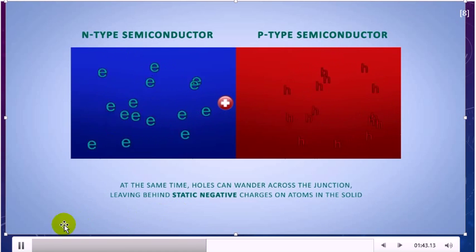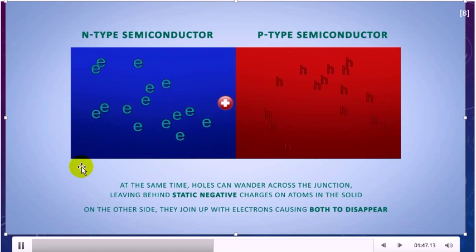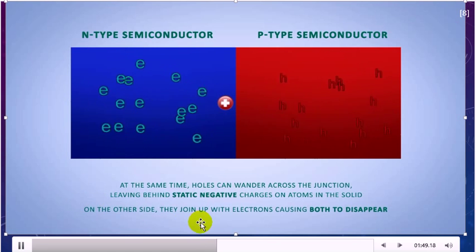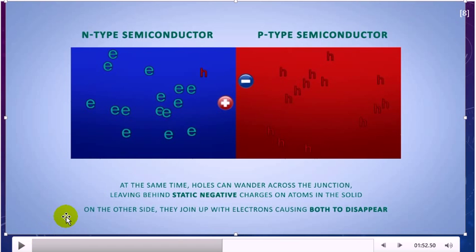At the same time, holes can wander across the junction, leaving behind static negative charge on atoms in the solid. On the other side, they join up with electrons causing both to disappear.